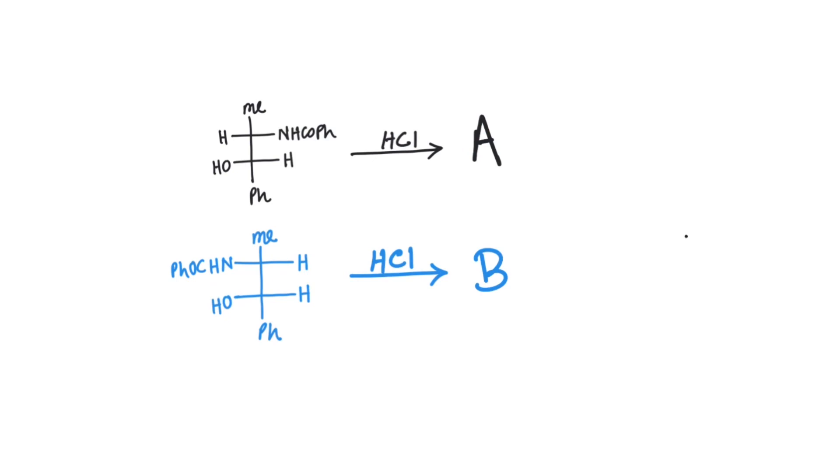Welcome to Chemistry Lover, and this is a very interesting question. You have been given two compounds, compound one and compound two, and both are treated with HCl. Basically, both are the same compound but two different diastomers.